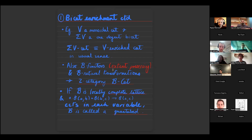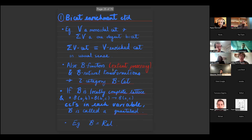A well-studied case is the quantaloid case, where these are locally complete lattices — locally posets, well-behaved posets. What does that mean here? It means complete lattices, and you want the composition to be co-continuous in each variable, then you call it a quantaloid. Co-continuous in each variable means they have right adjoints, which enables more homlike constructions.